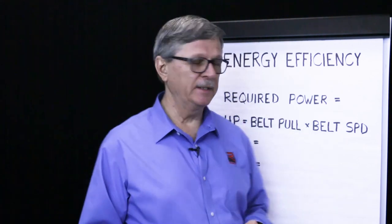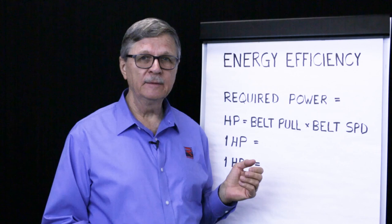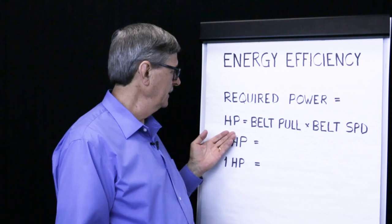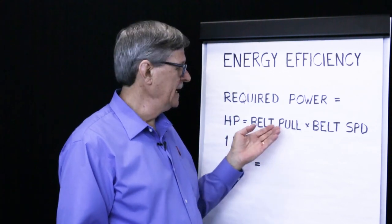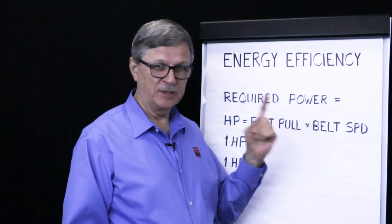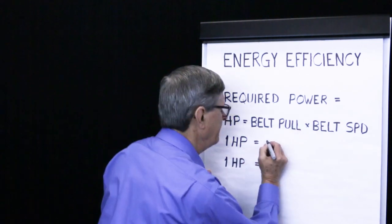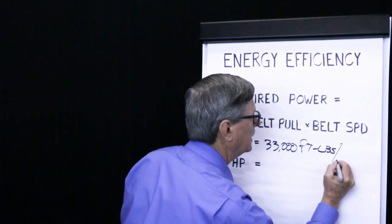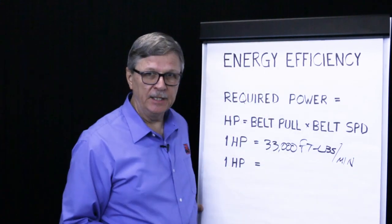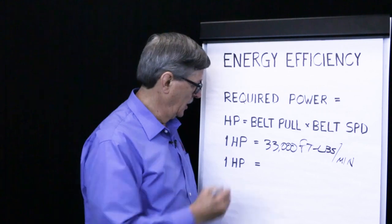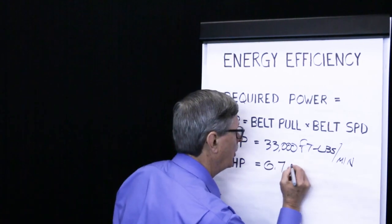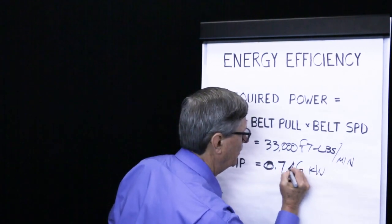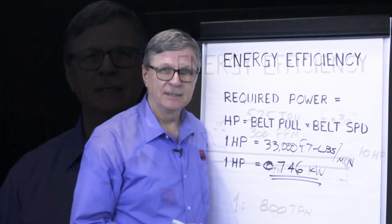Here are some key terms we need to define at the beginning of this presentation. We know that required power equals the product of belt pull and belt speed — required power equals pounds of belt pull times feet per minute of belt speed. Another key definition: one horsepower equals thirty-three thousand foot pounds per minute. And one horsepower equals zero point seven four six kilowatts.